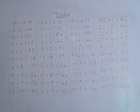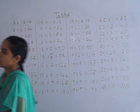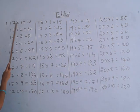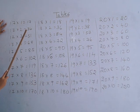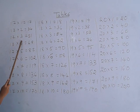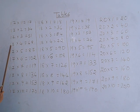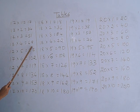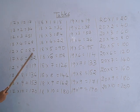Okay children, our next table is 17th. See all of you. 17 ones are 17, 17 twos are 34, 17 threes are 51, 17 fours are 68, 17 fives are 85.